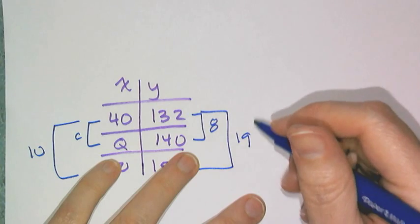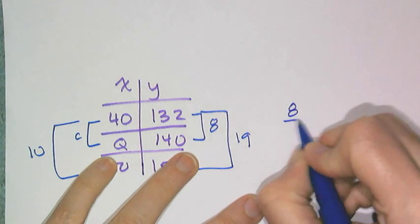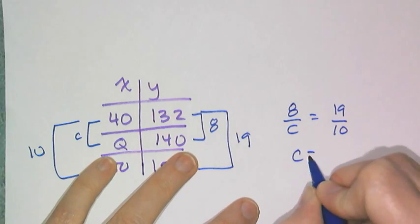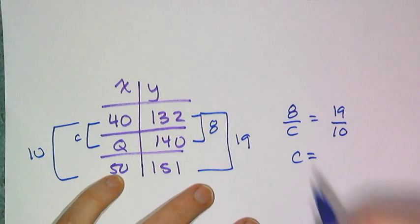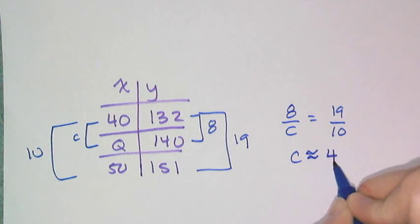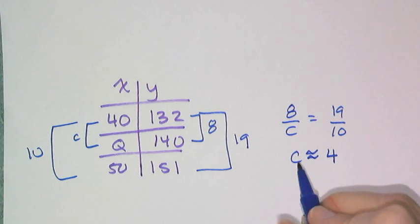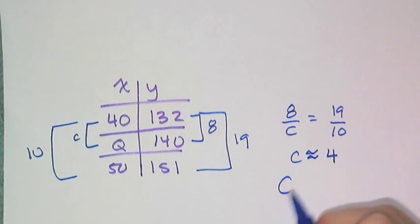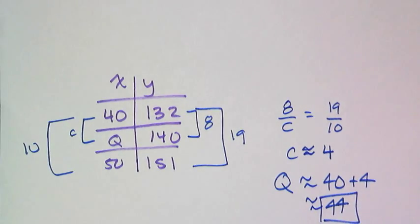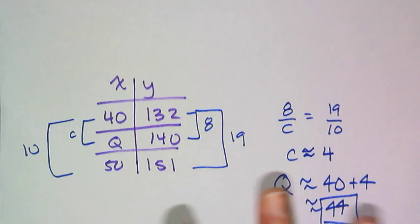If I'm just going to stick with the slope, then I have 8 over c equals 19 over 10. And if I solve for c, I get that c is approximately equal to 4. And so that means that this q value is approximately equal to 40 plus 4, which is 44. And that's how interpolation works. It's just working with slope.